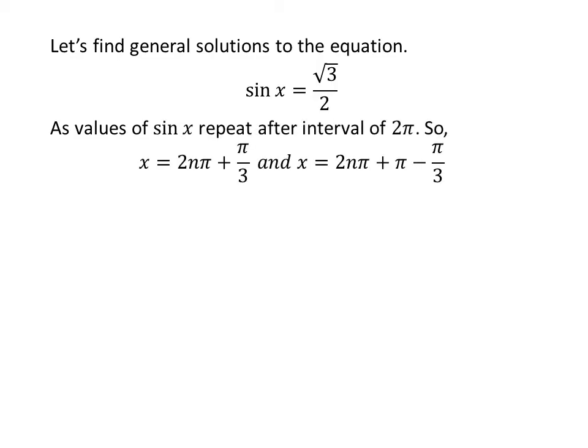Let us find the general solutions. As we know, the values of sine x repeat after the interval of 2π. So the general solutions are 2nπ plus π upon 3 and 2nπ plus π minus π upon 3, where n is an integer.